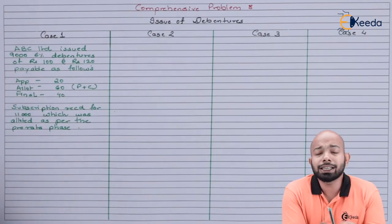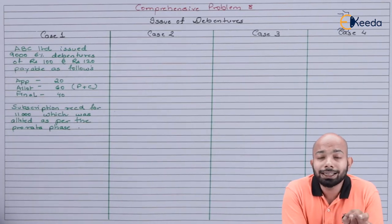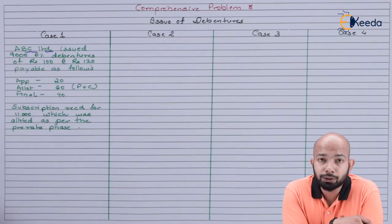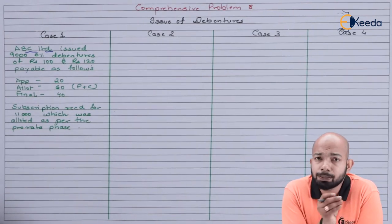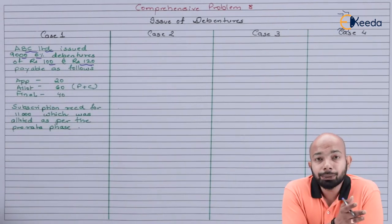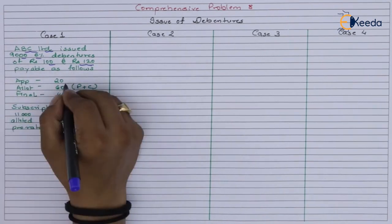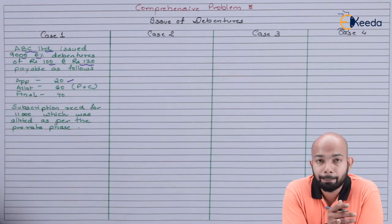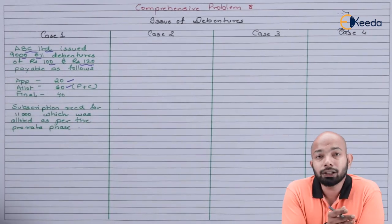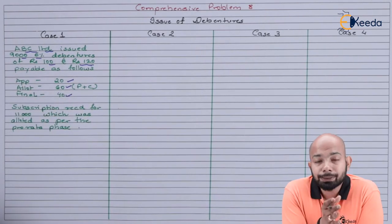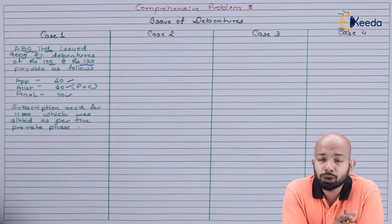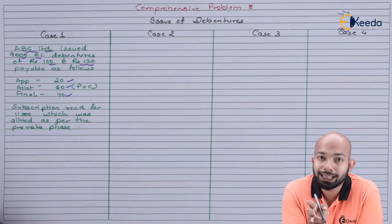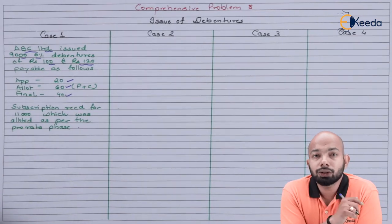Case one details: it is related to ABC Limited, who issued 9,000 6% debentures of Rs.100 at Rs.120 — that means Rs.20 premium. The Rs.120 was payable as follows: application Rs.20, allotment Rs.60 (which includes premium as well as capital), and the final call Rs.40. The subscriptions received were for 11,000, which were completely allotted on a pro-rata basis — meaning 11,000 debenture applications got allotment of 9,000 debentures.